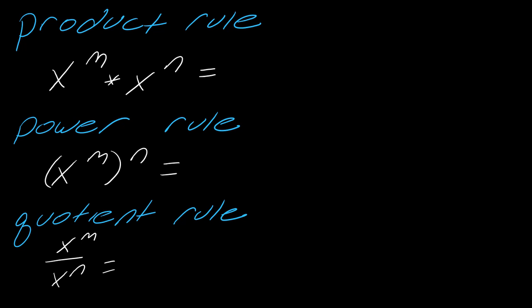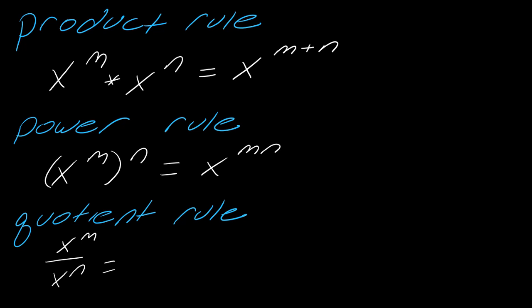The first one is the product rule: if you're multiplying two of the same bases together, you can add their exponents, so this would be x to the m plus n. The power rule says if you have a set of parentheses with exponents, you can multiply them, giving you mn. For the quotient rule, to simplify those exponents you take the top minus the bottom.